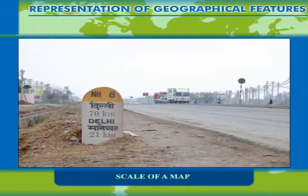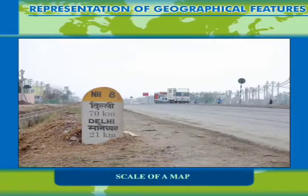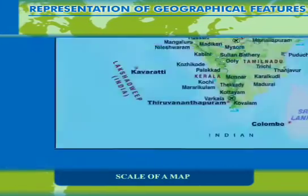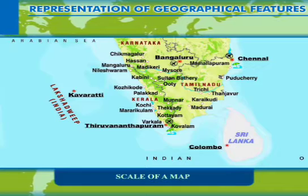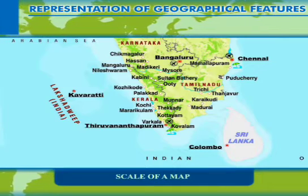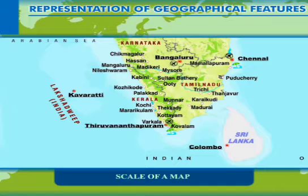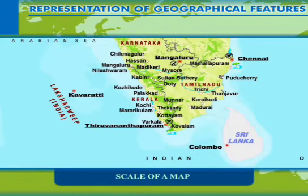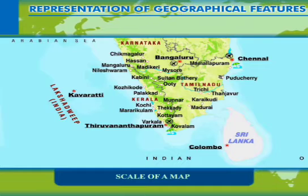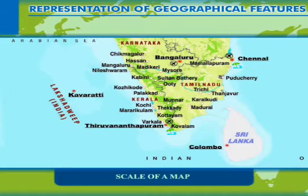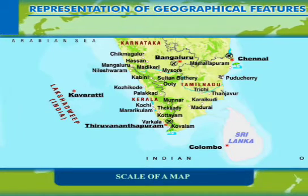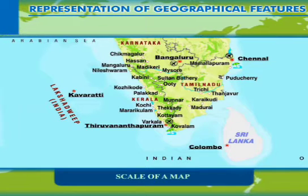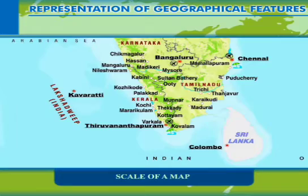Scale is defined as the ratio of the distance on the map and the corresponding distance on the ground. The distance on the ground is usually measured in large units such as km or miles, while the units of measurement on the map are cm and inches. The scale shows how many cm or inches on the map represent how many km or miles on the ground. For example, the scale reads 1 cm is equal to 1 km.